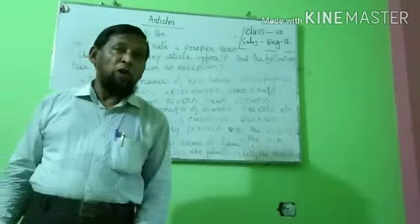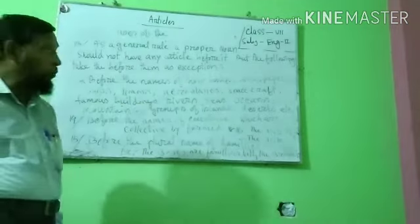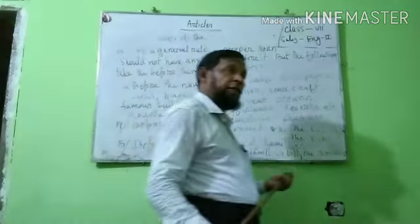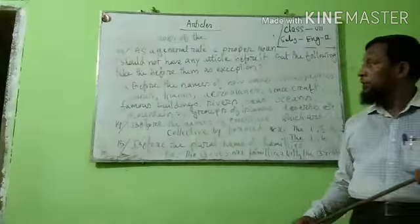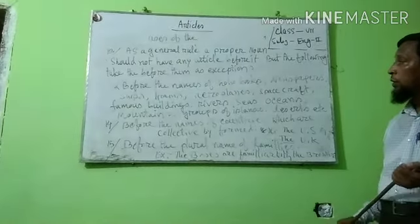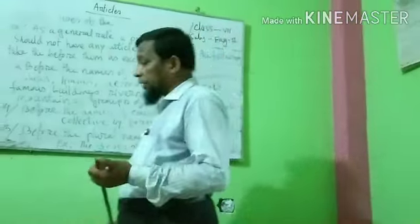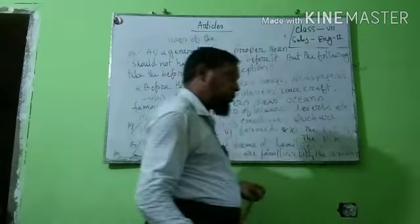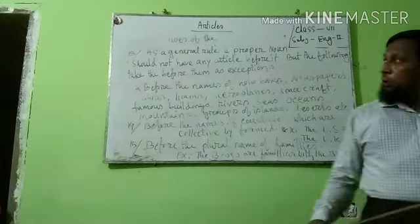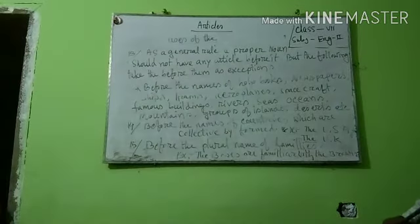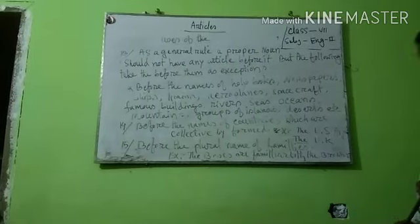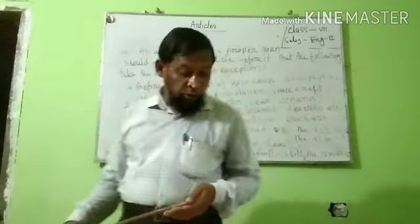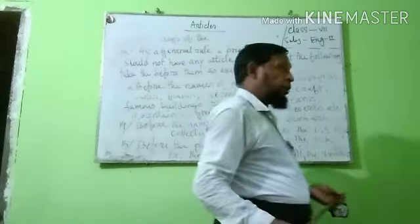Articles — how many kinds? Two kinds: definite and indefinite. Indefinite article A and AN, definite article THE. Uses of THE, uses of A and AN — you know everything now. After all, practice more — a lot of practice must be done.